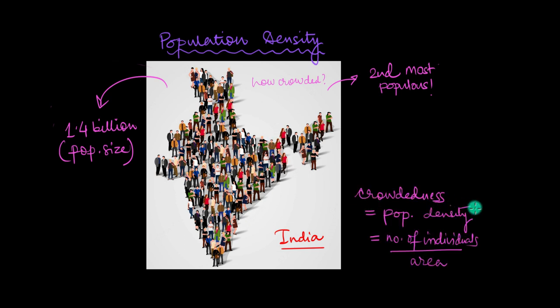The crowdedness of a particular area is expressed as population density. Now, you must have noticed that I have written POP everywhere whenever I am talking about population. This is just an abbreviated form. Given that POP is an actual word, please don't mix between the two. I'll just probably write it down here. So, POP dot means population in this entire video. Just something to remember. So, the crowdedness of any particular area, that's what population density is.